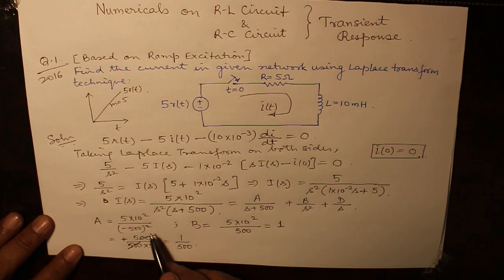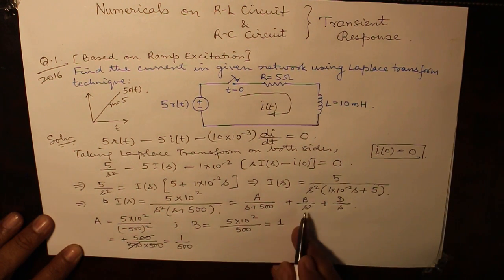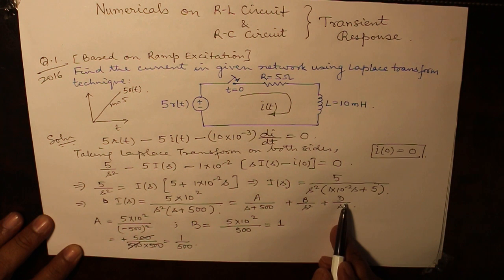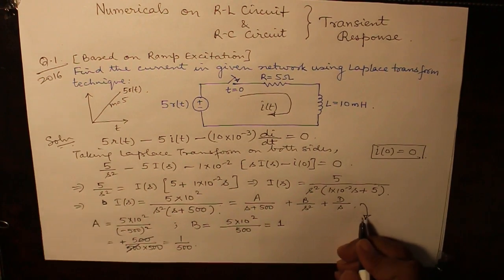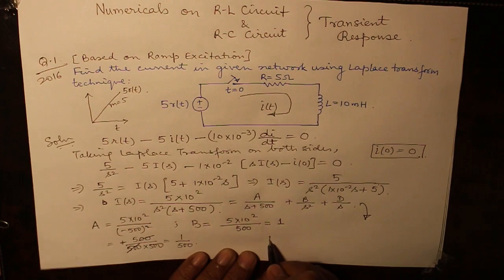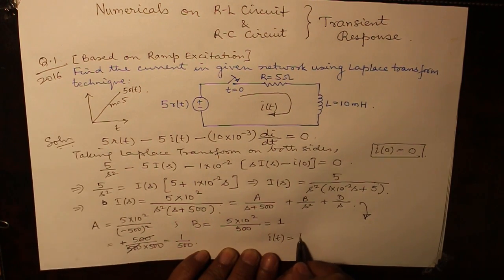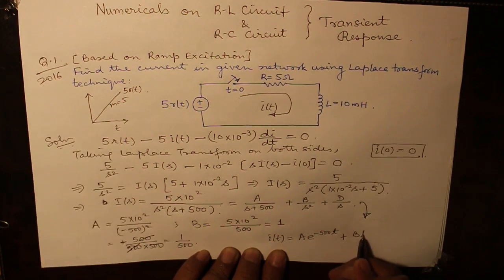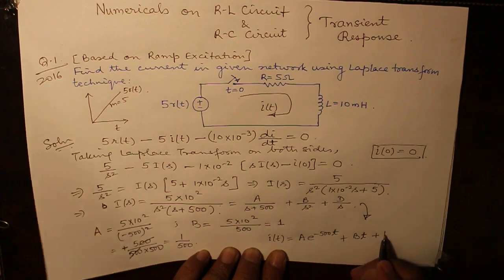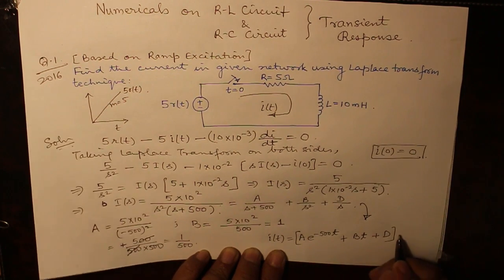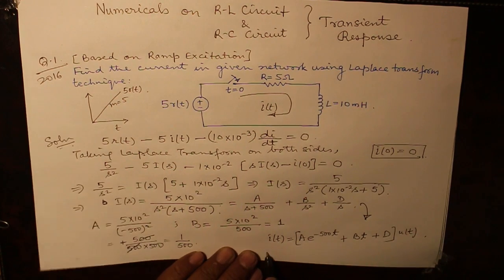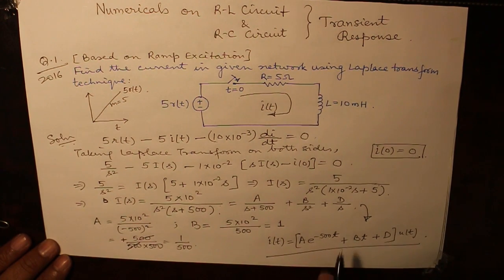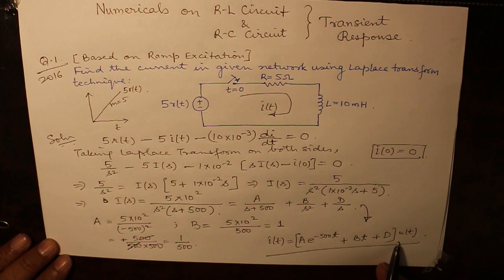Substituting the values of A and B and subtracting from this we obtain the value of D. Once you have A, B, D with you, you can easily take the Laplace inverse and the answer will be of the form IT equals A e raised to the power minus 500T plus B into T plus D multiplied by U. So it is just a matter of finding out the values of A, B, and D.